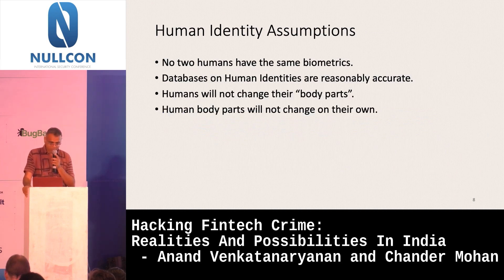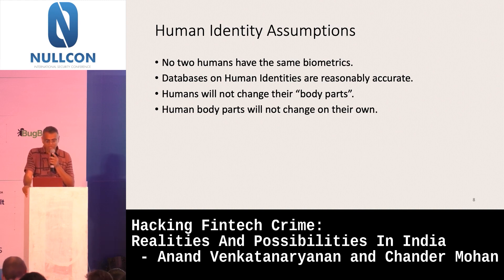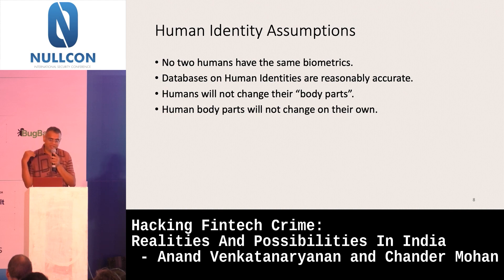The common assumptions technologists make about human identity are: no two humans ever have the same biometrics; databases on human identities are reasonably accurate; humans will not change their body parts; and human body parts will not change on their own. These are the four assumptions that typically underlie human identity. Fraudsters understand this very well and work towards breaking those assumptions.